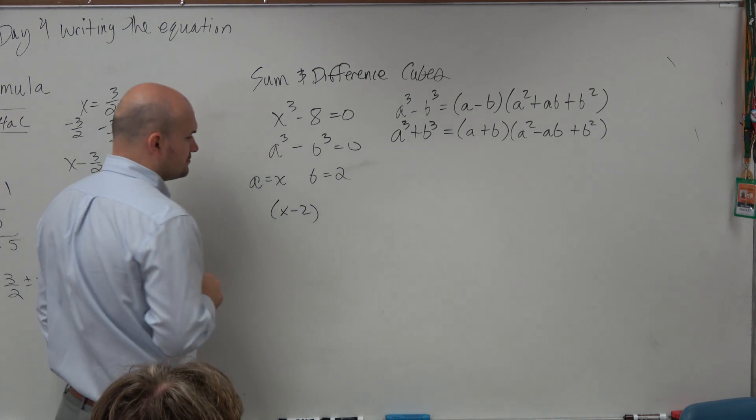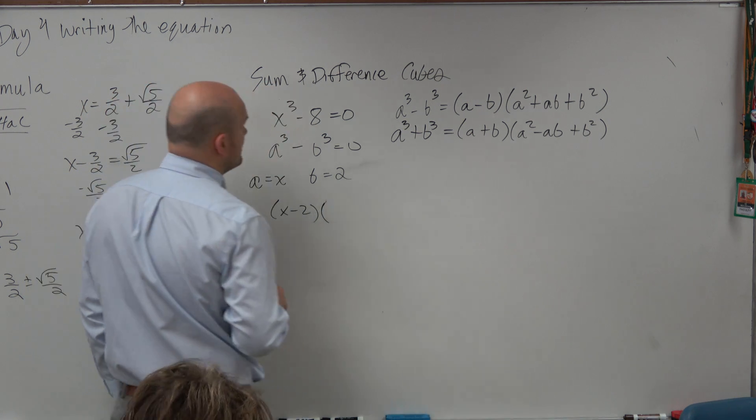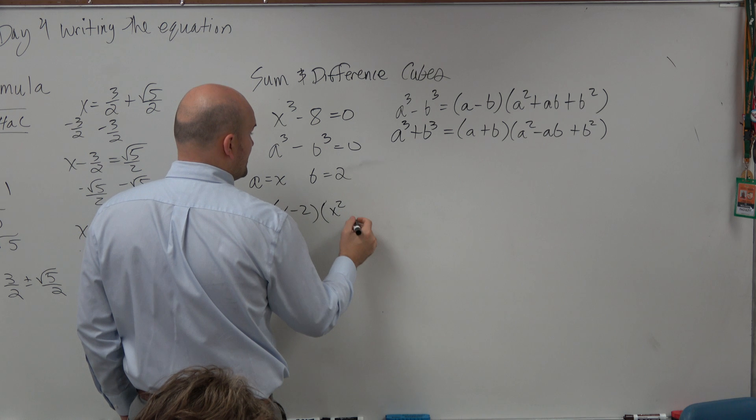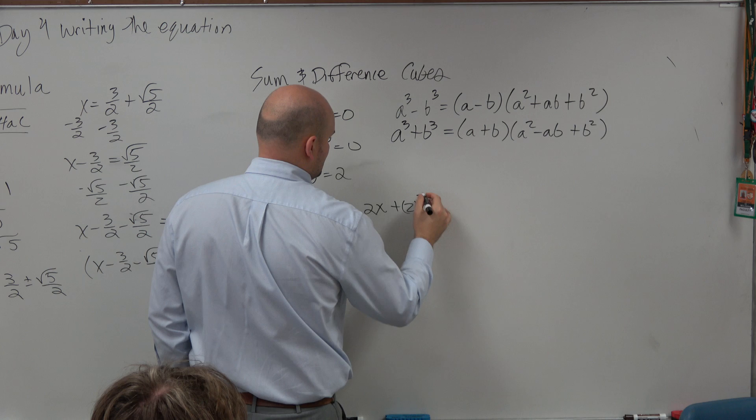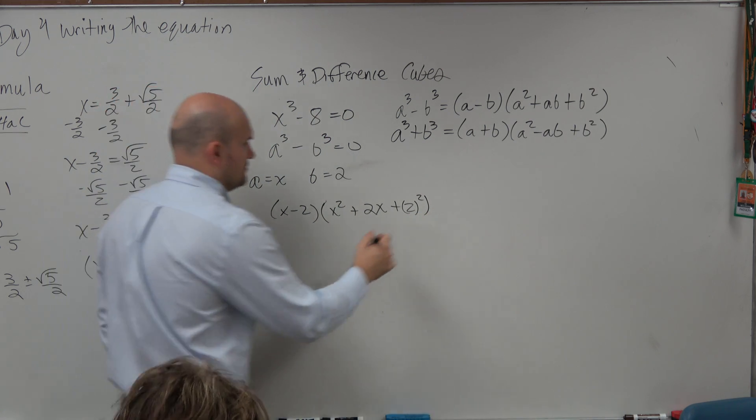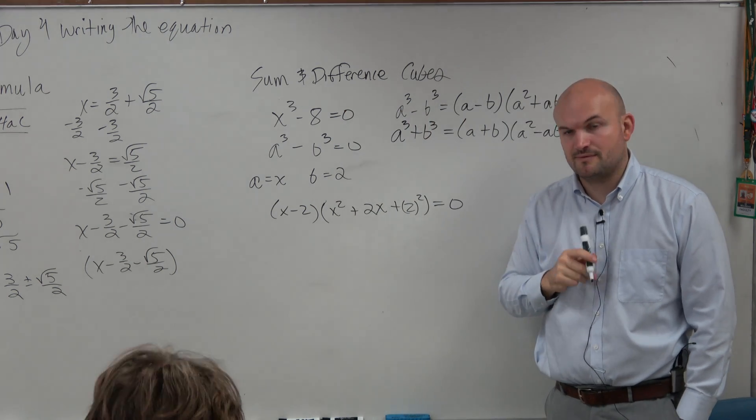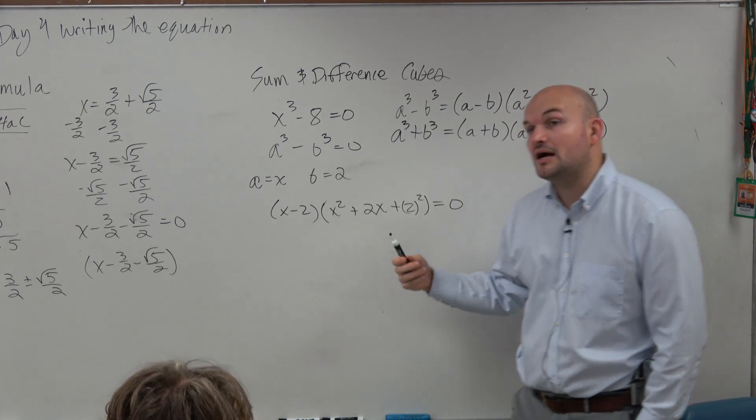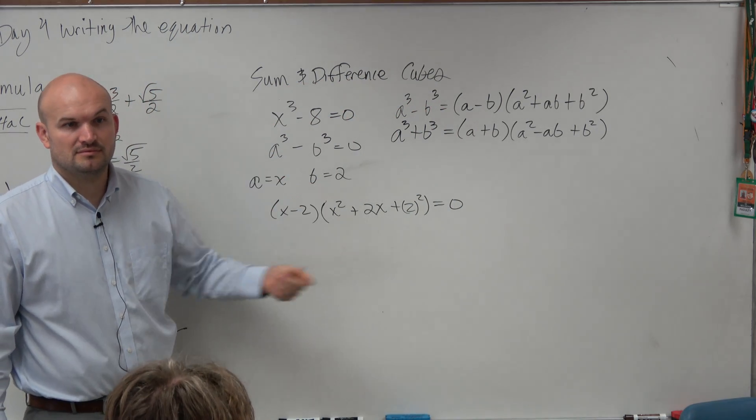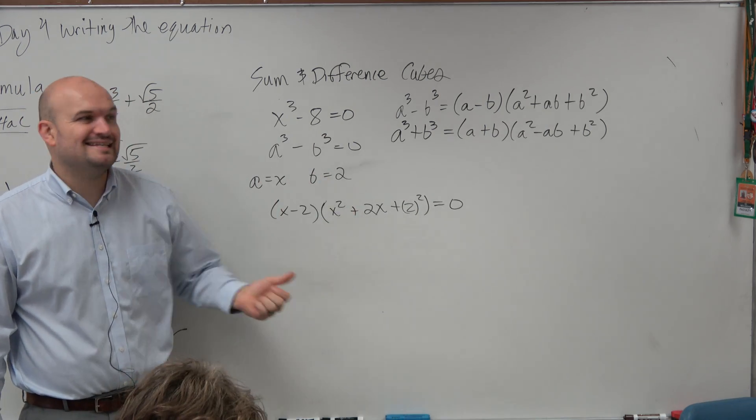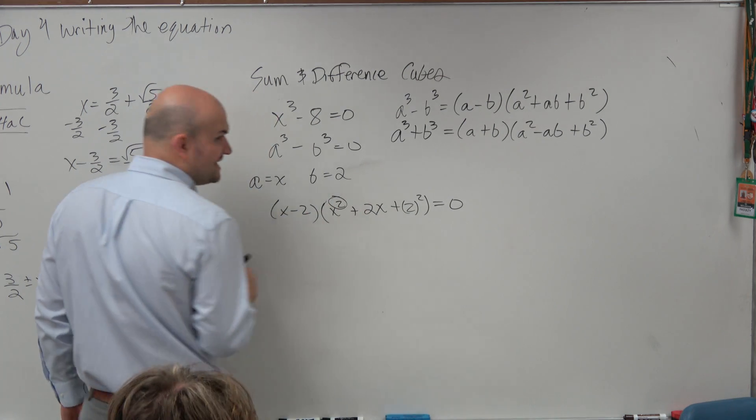So now we're just going to plug this in. x minus 2 times, let's see, we're going to have x squared plus 2 times x plus 2 squared. And we want to set that equal to 0 because that was originally set equal to 0. Now, again, talking about linear factorization, is this good? Do we know what the zero is? Zero there is 2, right? Fast, easy. We got something else we got to factor because this is not linear.